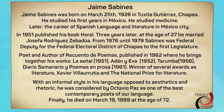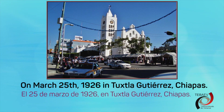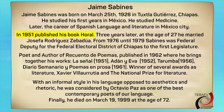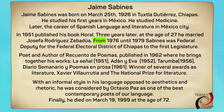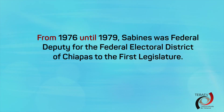Existen otro tipo de narraciones basadas en hechos históricos, como en el ejemplo que a continuación te presento. Para comprender mejor esta narración, plantearé algunas preguntas clave. ¿Cuándo fue nacido? Respondiendo a la pregunta: on March 25, 1926, en Tuxtla Gutiérrez, Chiapas. Este autor de origen chiapaneco estudió la carrera de medicina y la de lengua española y literatura en México. Su carrera lo llevó a publicar su libro oral en 1951. Observa este párrafo donde se hace uso de preposiciones como 'from' y 'until', con las cuales se identifica un periodo de inicio a fin: From 1976 until 1979, Sabines was federal deputy for the Federal Electoral District of Chiapas to the first legislature.